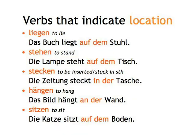German also uses particular verbs to indicate the location of things. Although it's possible to use ist, just like is in English, Germans tend to use the specialized verbs a lot more. Liegen — meaning to lie. Das Buch liegt auf dem Stuhl — the book is lying on the chair, or we'd probably just say the book is on the chair. Stehen — to stand. Die Lampe steht auf dem Tisch — in German you say the light stands on the table, but in English we'd probably just say the light is on the table. Stecken — to be inserted, stuck in something. Die Zeitung steckt in der Tasche — the newspaper is in the bag.